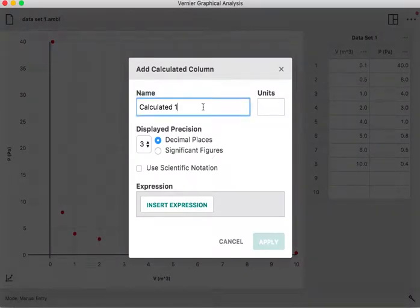There will be a default name. You probably want to change that to keep the record clear. So I'm going to call it inverse volume because that's what we're going to be calculating here. The units of volume are cubic meters, so I'm going to just go 1 divided by meters cubed.